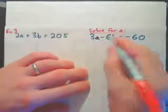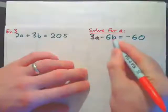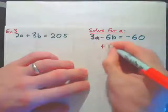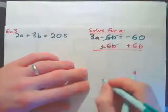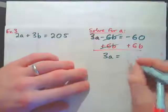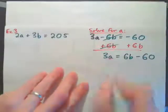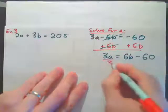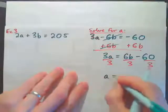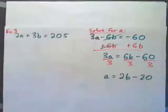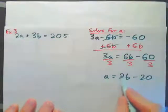Solving the second equation for a: we add 6b to both sides to get 3a equals negative 60 plus 6b, or 6b minus 60. Then divide everything by 3. Each term divides: 1 apple equals 2 bananas minus 20 cents. This makes sense — if 3 apples equals 6 bananas minus 60, then 1 apple equals 2 bananas minus 20.